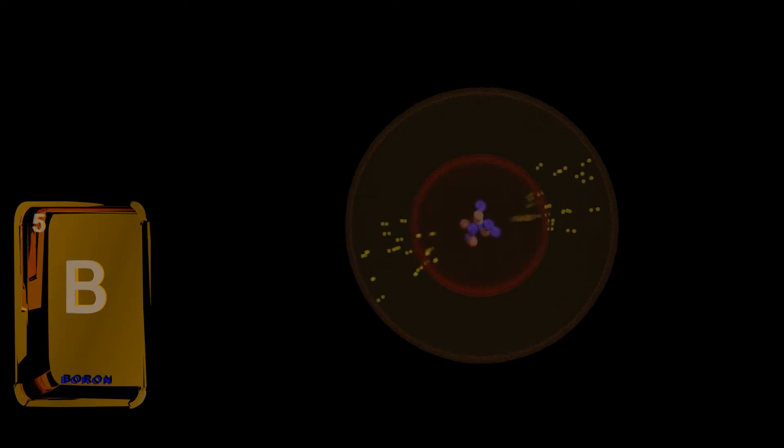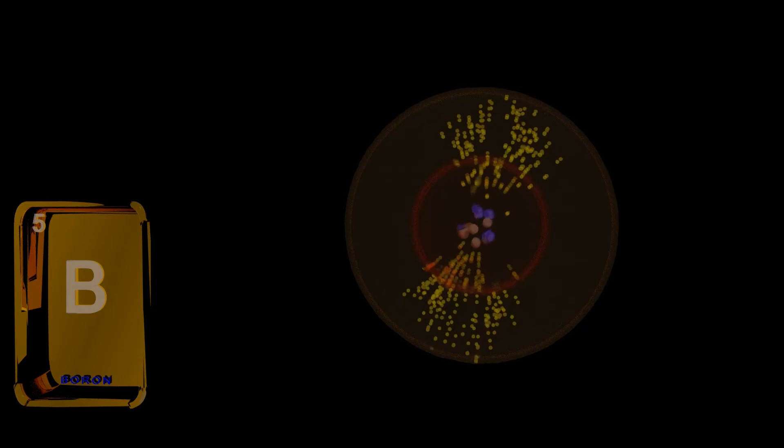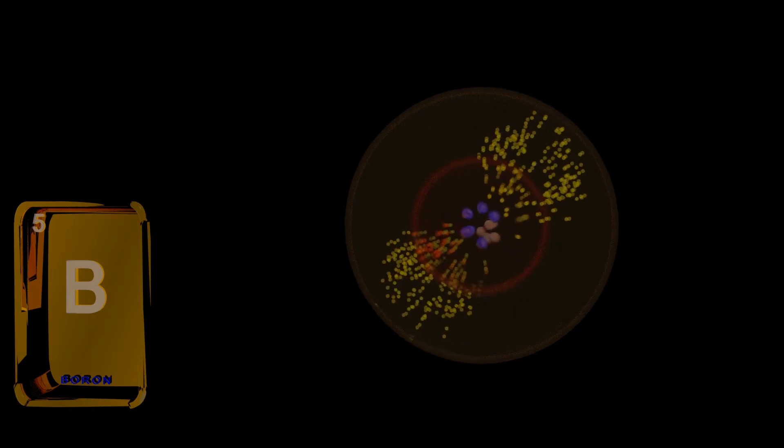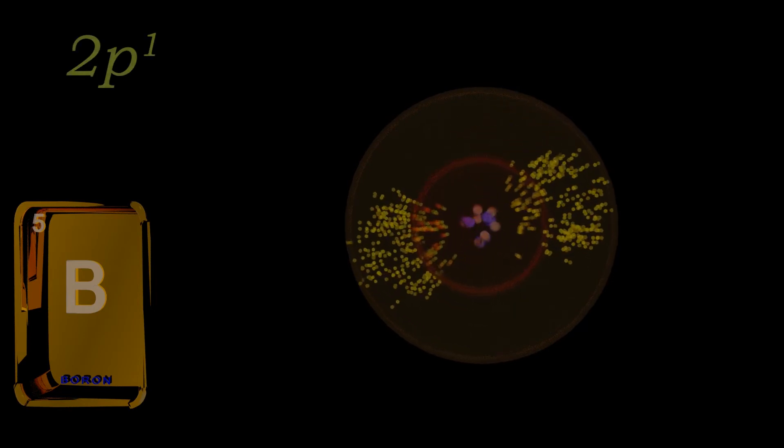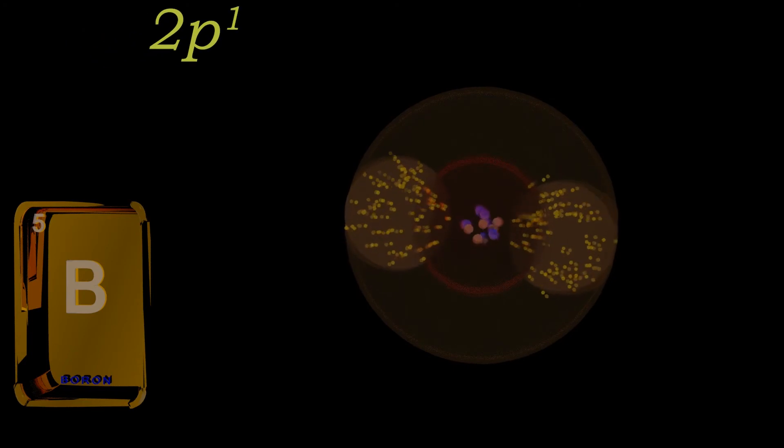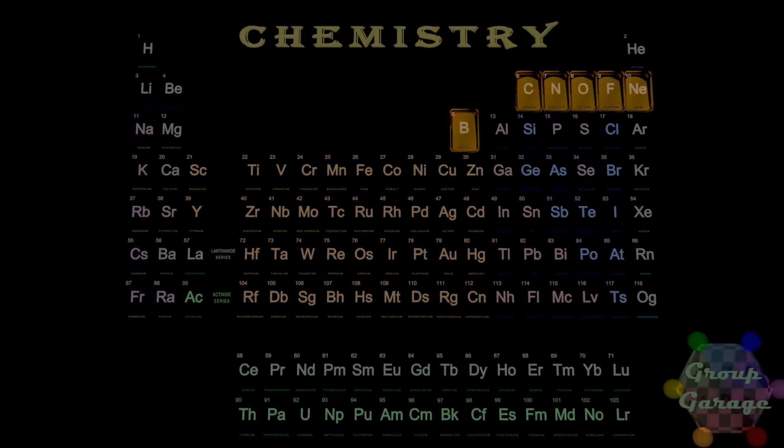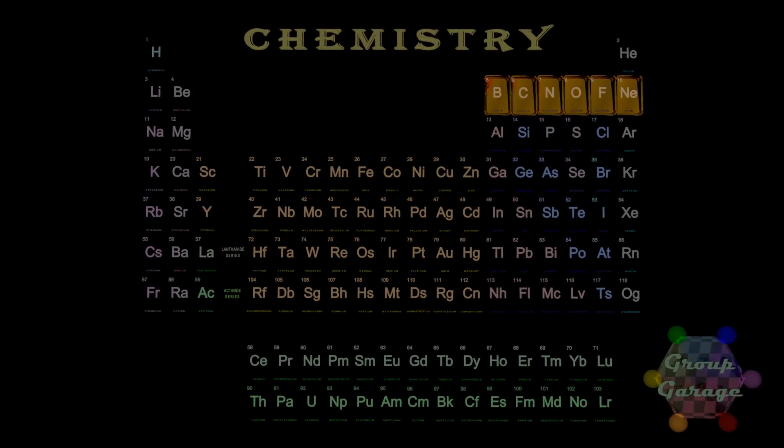When l equals one, as it does for these next six elements, we mark out the path of the first p electron. We start to notice a kind of a dumbbell shape. The p really stands for principle, but in this case, let's use it to remember the shape of the orbital, and we'll say p is for polar. See how the electrons are more common around what would be considered a polar cap of the atom? This is the 2p1 electron.